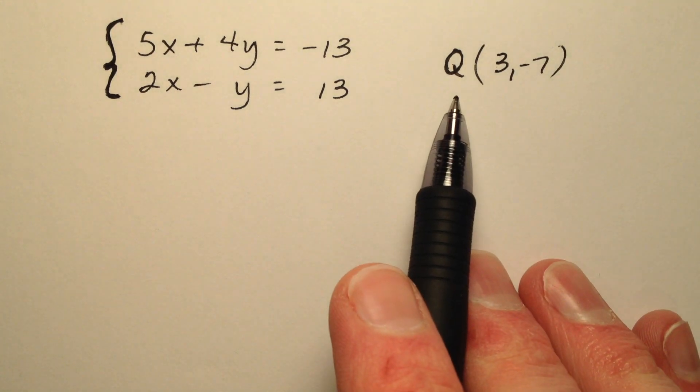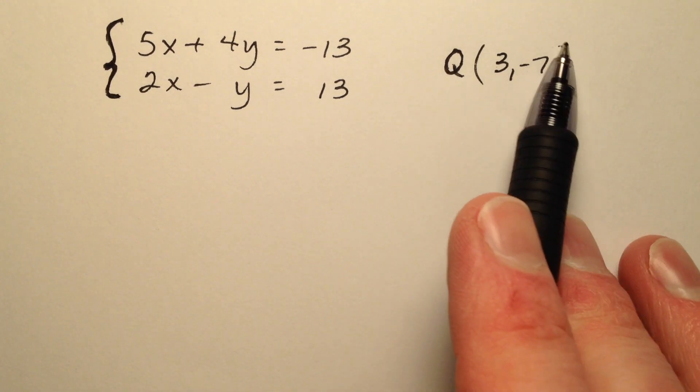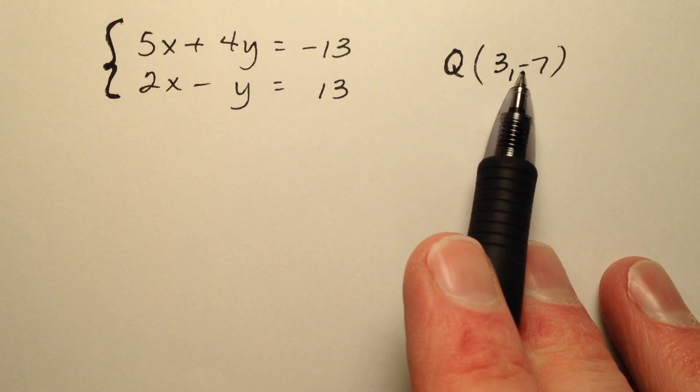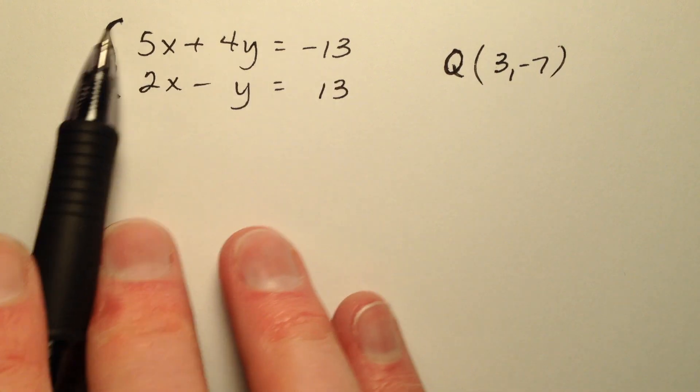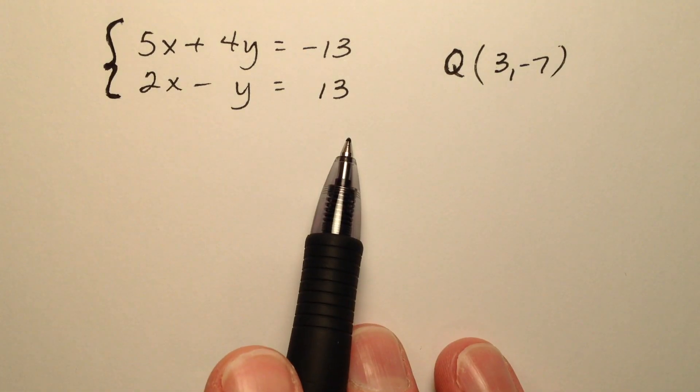In this example, we're going to determine whether point Q, which is given by the ordered pair 3, negative 7, is going to be a solution of this linear system.